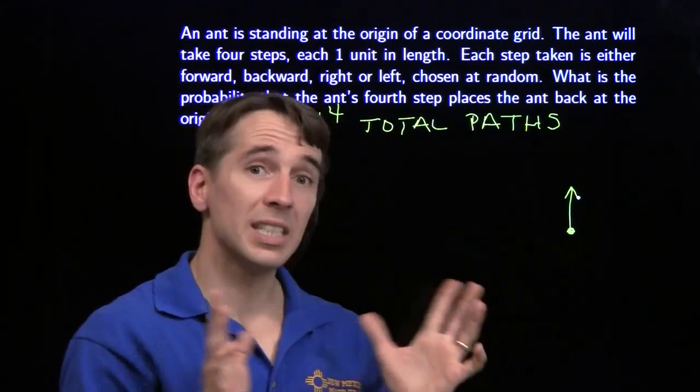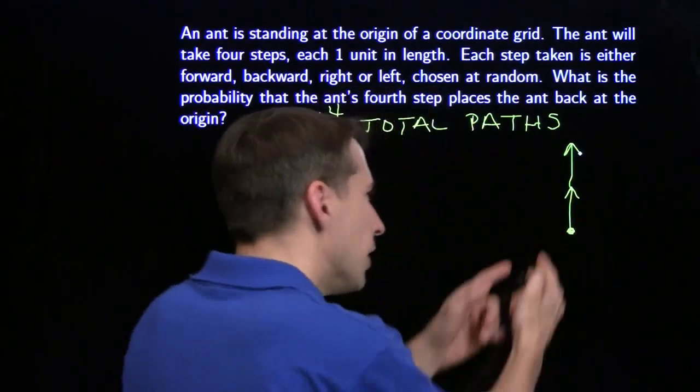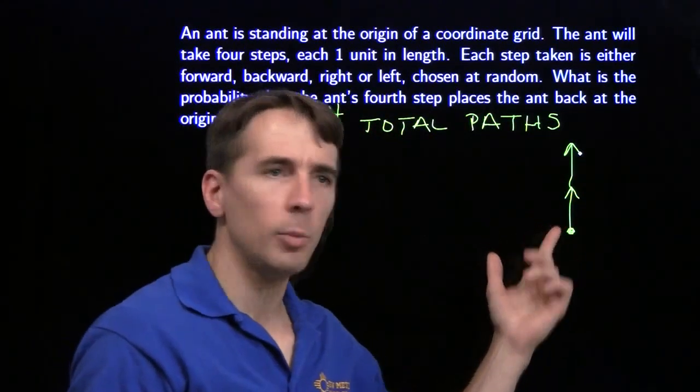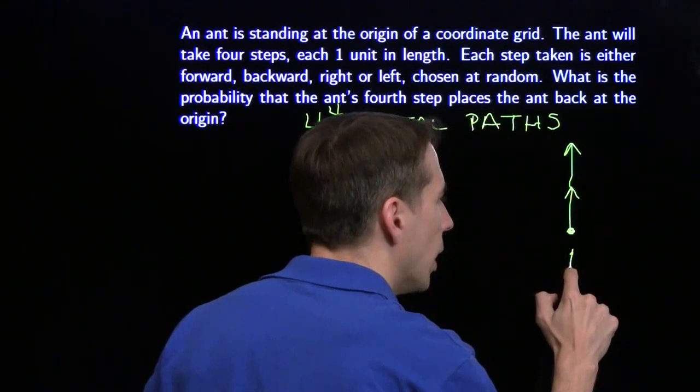First step goes forward. Second step, what if the ant also goes forward? Well, if the ant takes the second step forward, the only way the ant can get back home after four steps is to go back, back. Only one way back home.